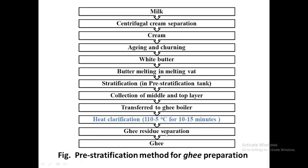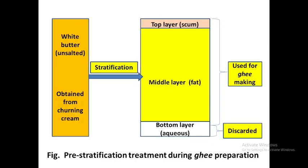When comparing the three commercial methods for flavor, the direct cream method and creamery butter method produce ghee with similar flavor. However, ghee from the pre-stratification method somewhat lacks in flavor. This is because the aqueous or serum part — which is responsible for flavor development — is partially removed during stratification. Less serum means less flavor in the resultant product.